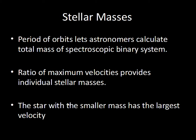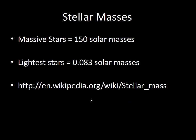The star with the smaller mass has the greatest speed. The star that has more mass sits more in the middle of the orbiting system, doesn't move as much, and has a smaller speed. But the smaller mass has the largest velocity.